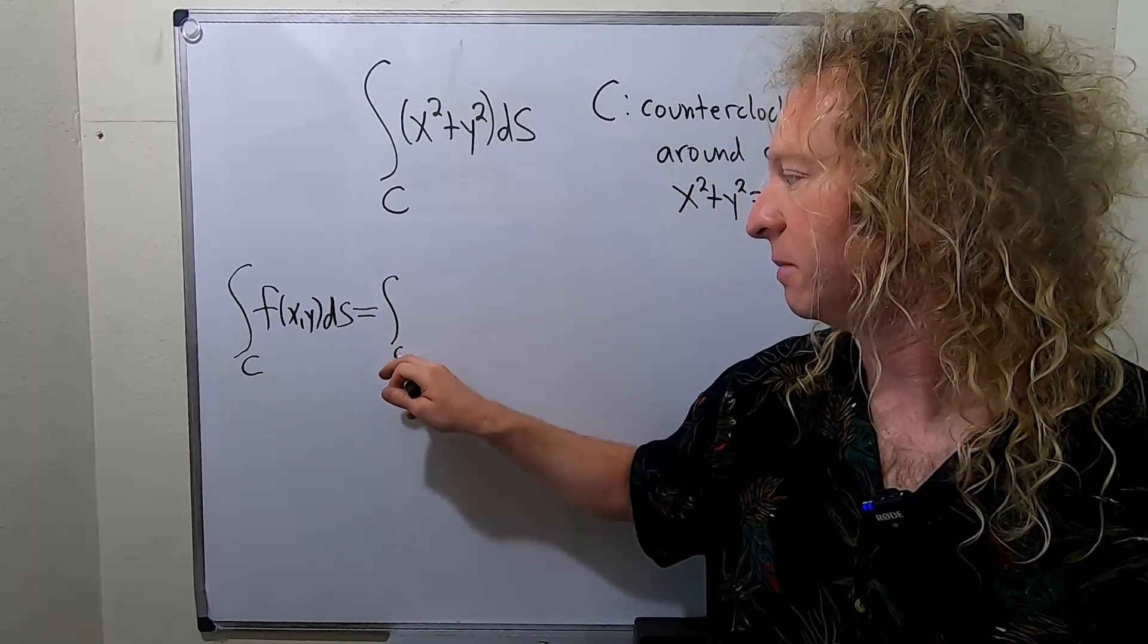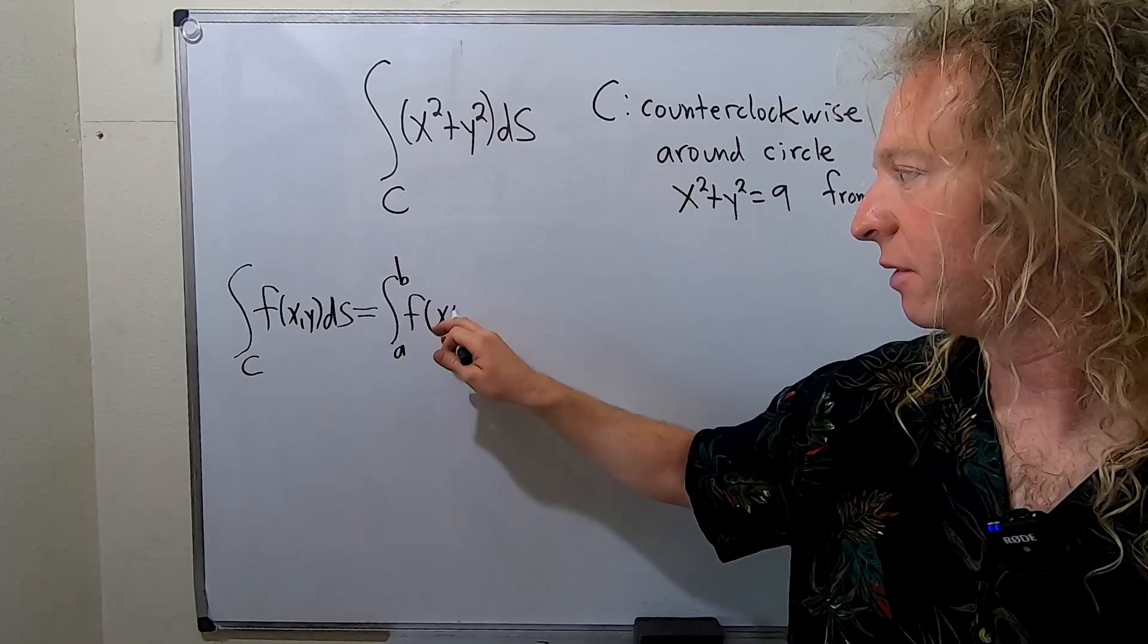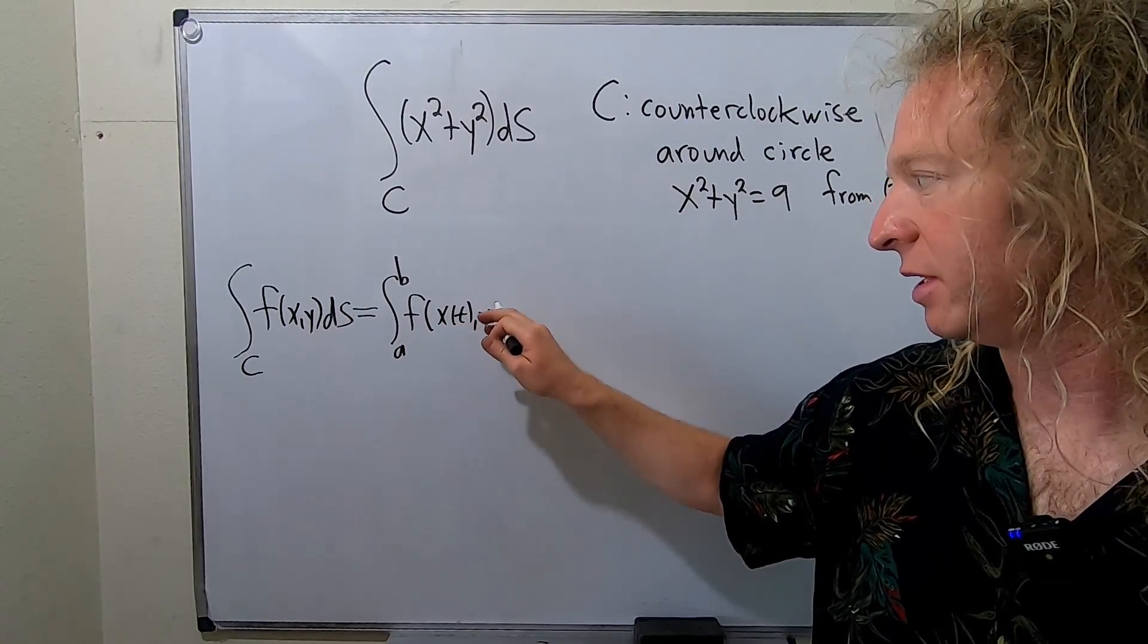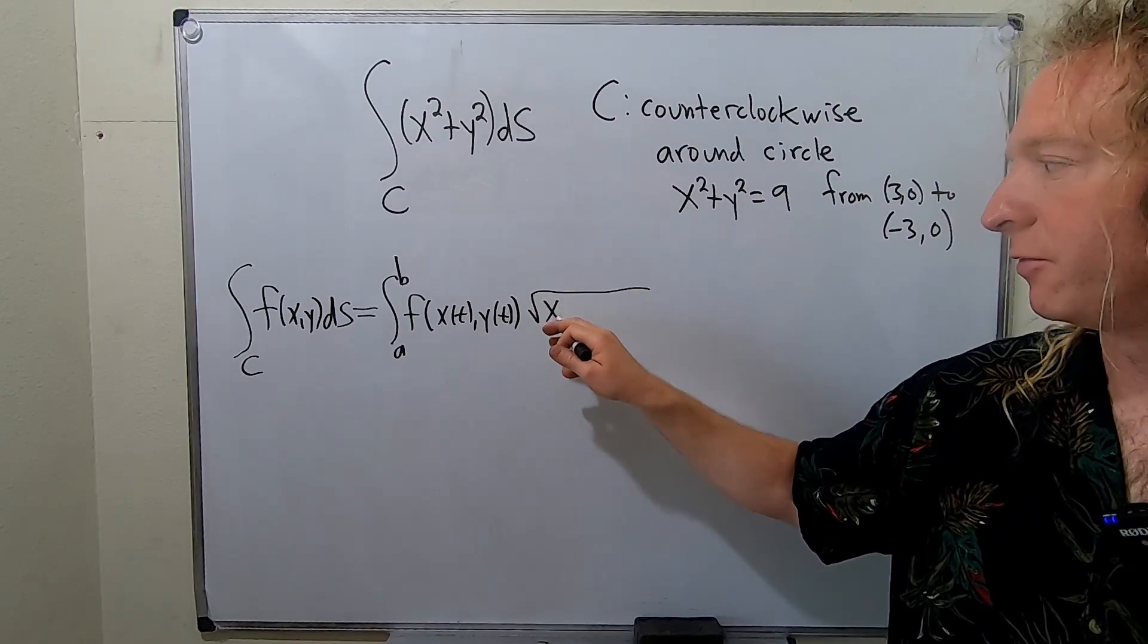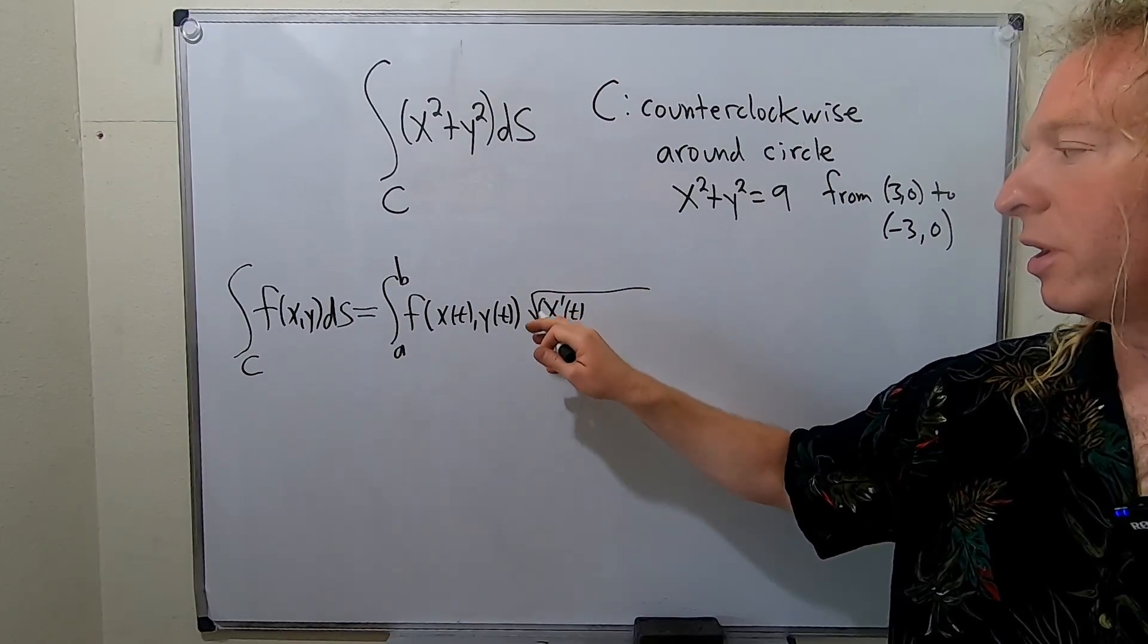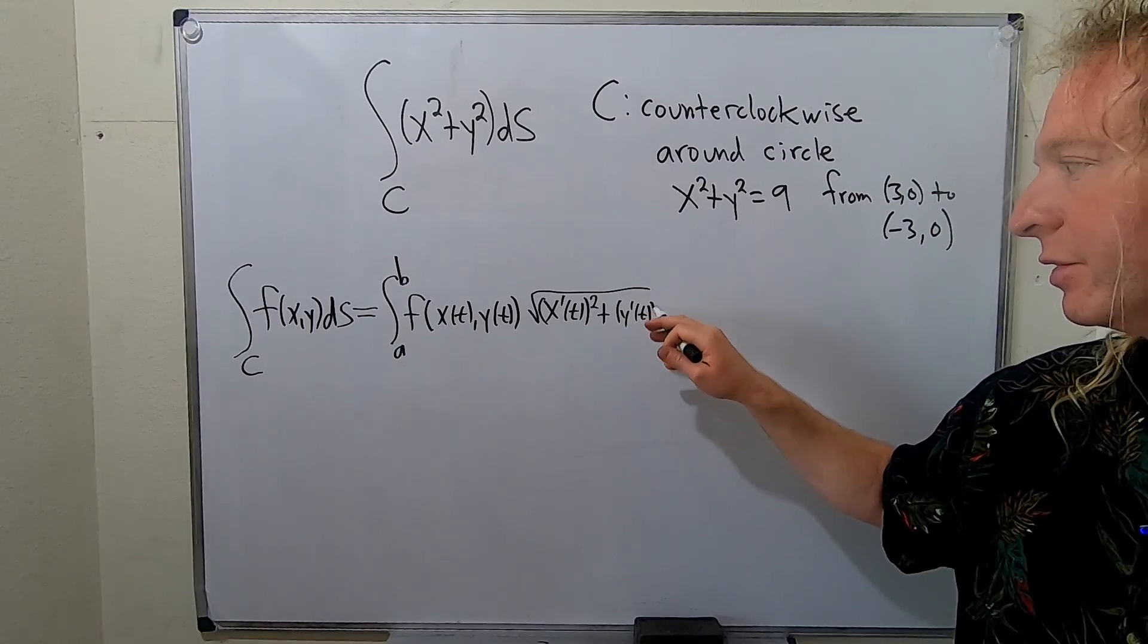is equal to the integral from a to b of f of x of t, y of t times the square root of x prime of t quantity squared plus y prime of t quantity squared dt.